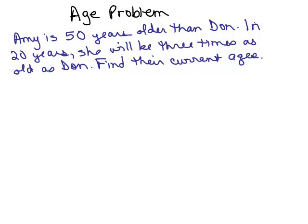Here's an age problem we're going to solve in this video. Amy is 50 years older than Don. In 20 years she will be three times as old as Don. Find their current ages.